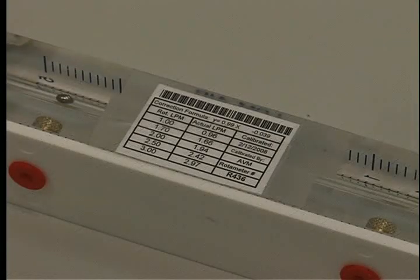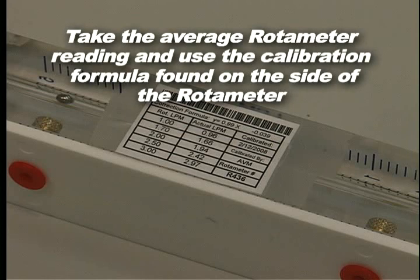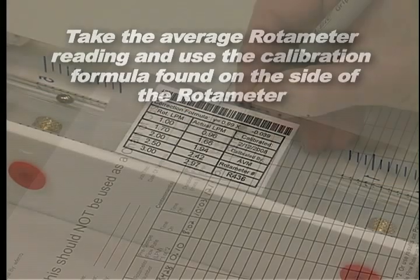All rotometers are calibrated against a primary standard quarterly. This calibration formula is located on the side of the field rotometer. Take the average rotometer reading and plug it into the calibration formula found on the side of the rotometer to determine your actual flow rate.